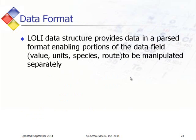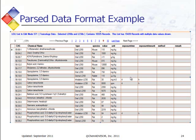As far as how Lawley presents the data, Lawley actually presents it in a parsed format, enabling portions of the data field — such as value, unit, species, and route — to be manipulated separately. This slide shows how that is represented: the first column is CAS number, second column is chemical name, third column is the specific route of exposure, fourth column is the species, next column is the value, the next column is the unit, and for inhalation data, there are two additional columns for exposure time as a number and exposure unit, which is generally hours.